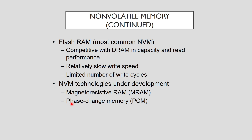Other NVM technologies under development could overcome some shortcomings of flash RAM. Two promising candidates are magnetoresistive RAM (MRAM) and phase change memory (PCM). MRAM stores bit values by using magnetic polarity. PCM, also known as phase change RAM, uses a glass-like material called GST (germanium-antimony-telluride) that, when heated to the correct temperature, can switch between amorphous and crystalline states to represent bit values.